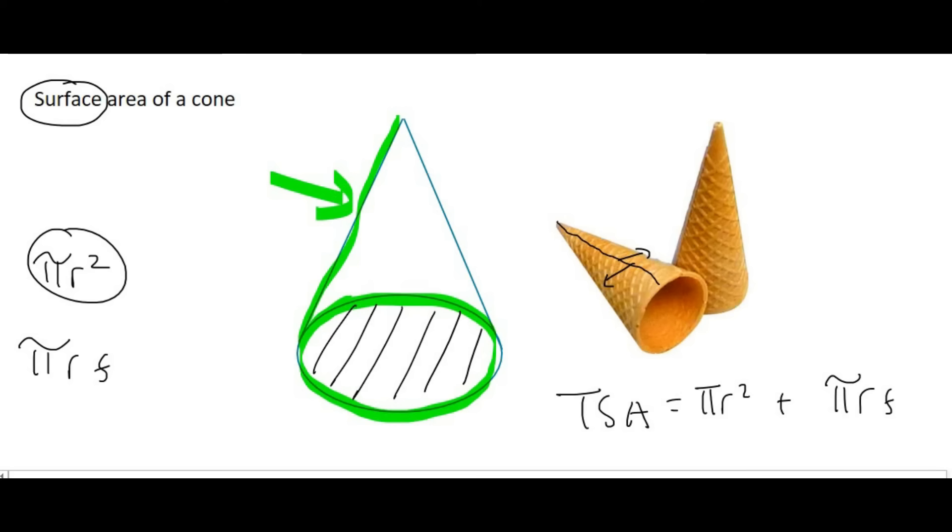Now, what if in a test they give you a question on a party hat, for example. So we know that a party hat, just like this ice cream cone, is completely empty at the bottom. So which part over here would we have to leave out? Well, well done if you said the πr² part. Because if you have a party hat, there is no circle at the bottom.